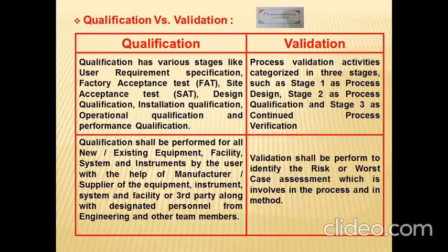Qualification has various stages: User Requirement Specification, Factory Acceptance Test (FAT), Site Acceptance Test (SAT), Design Qualification, Installation Qualification, Operational Qualification, and Performance Qualification. Process validation activities are categorized in three stages: Stage 1 - Process Design, Stage 2 - Process Qualification, and Stage 3 - Continuous Process Verification.